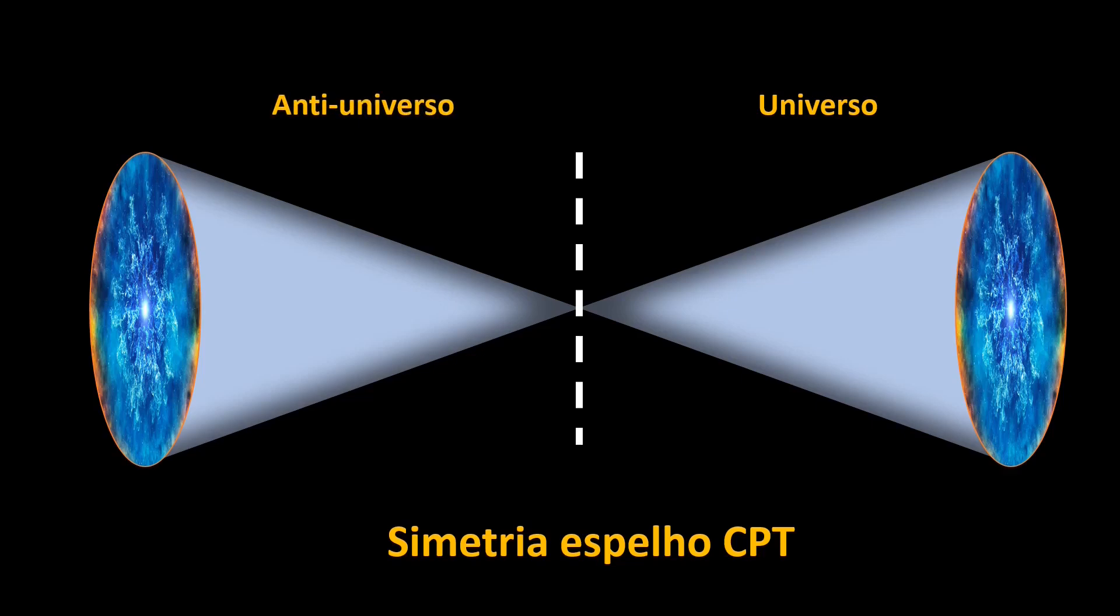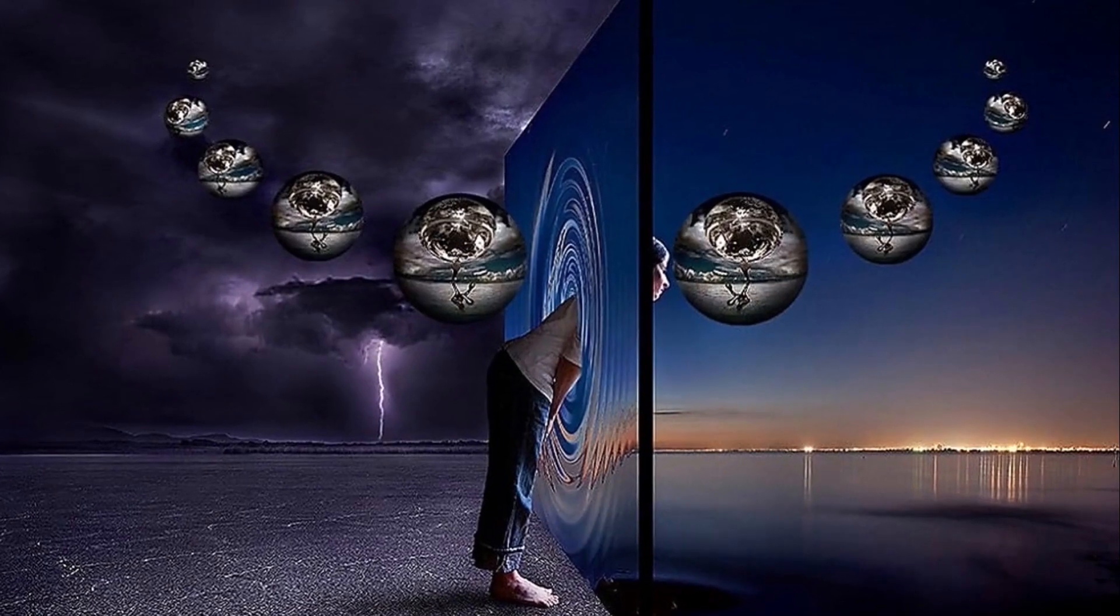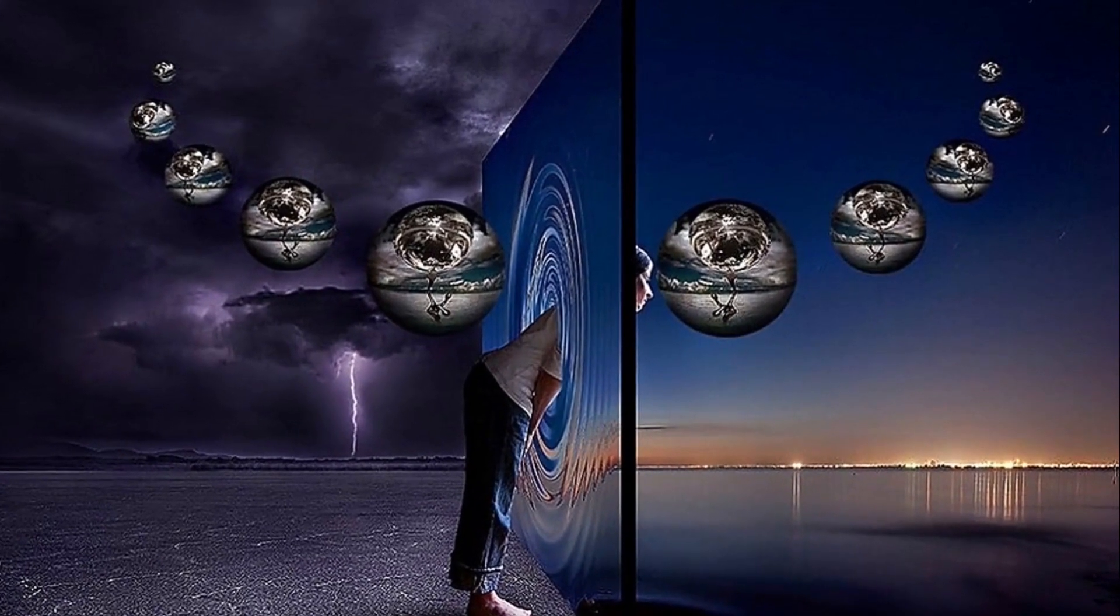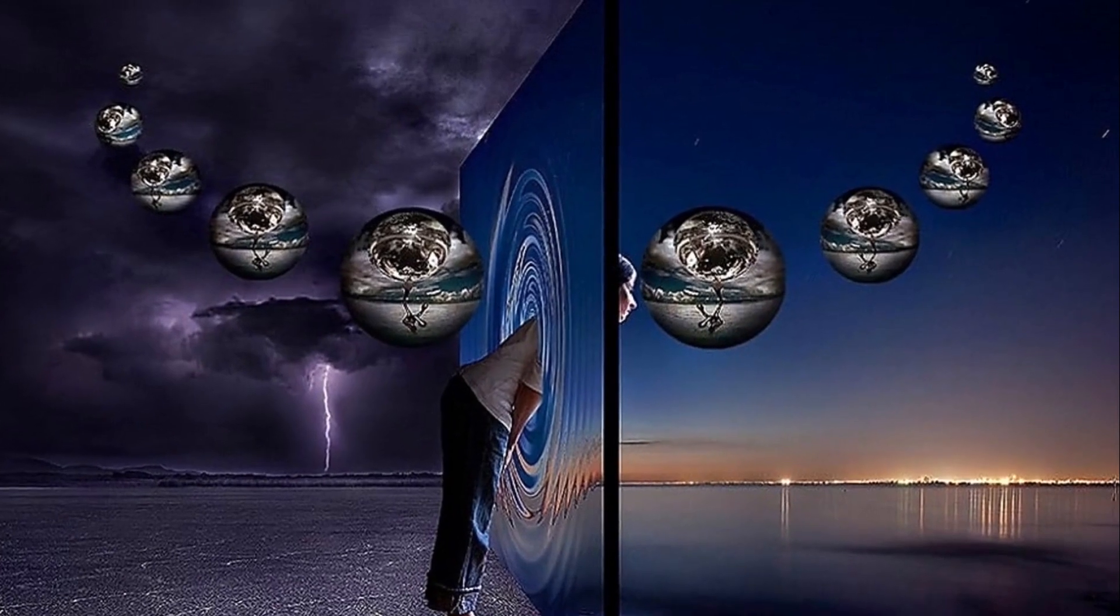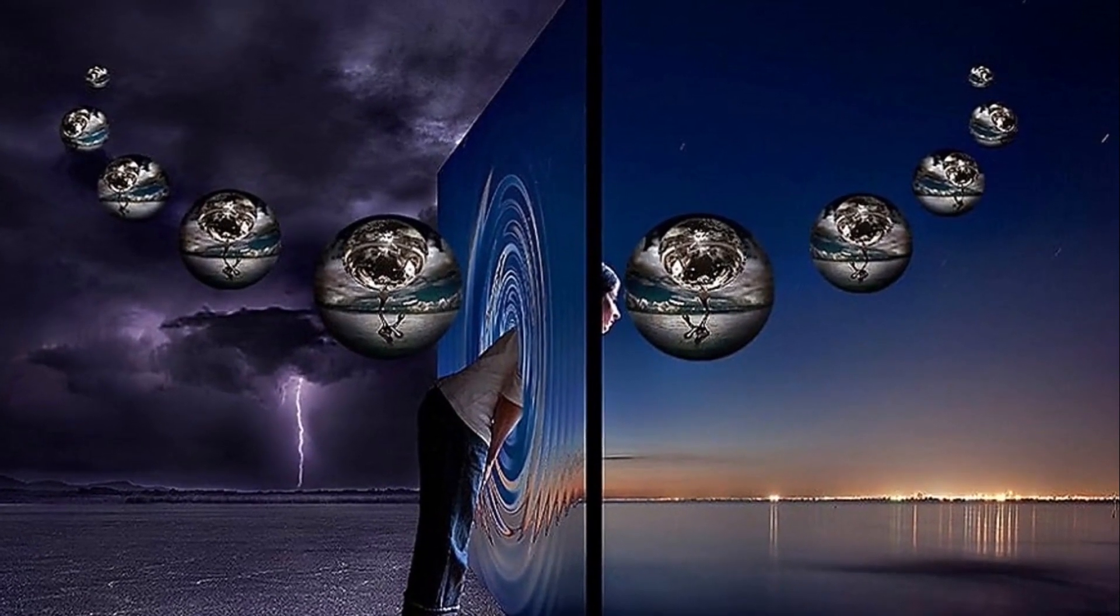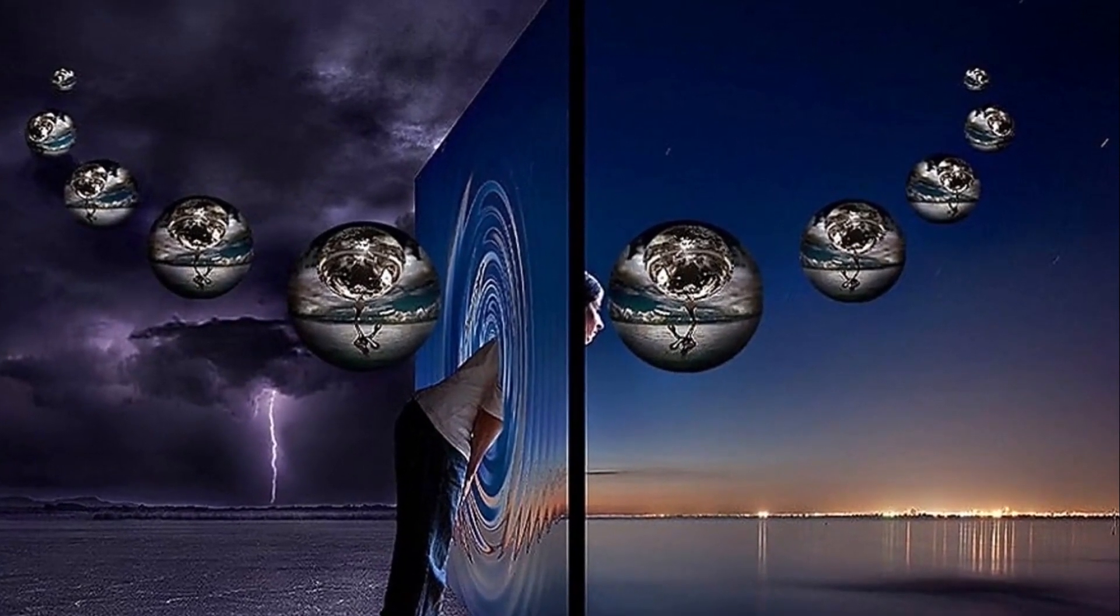Este cosmos teria todas as cargas opostas às nossas. Seria invertido no espelho e retrocederia no tempo. Nosso universo é apenas um de um gêmeo. Tomados em conjunto, os dois universos obedecem a simetria CPT.